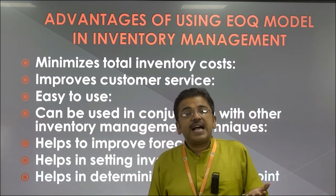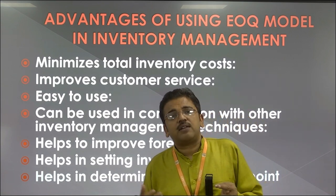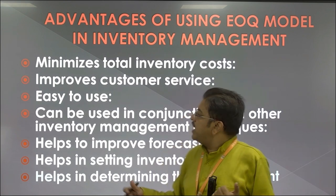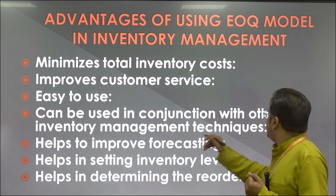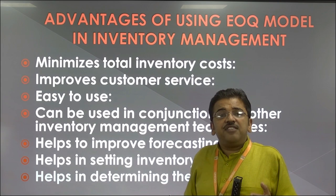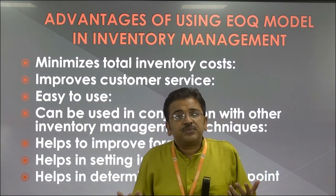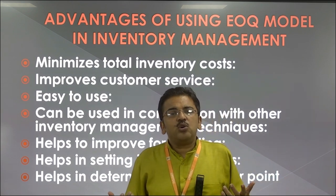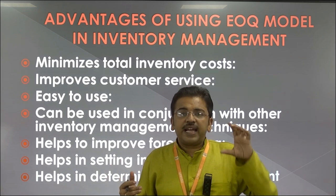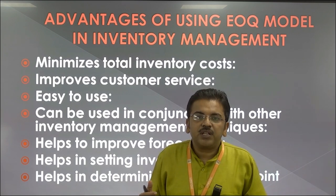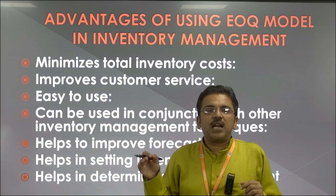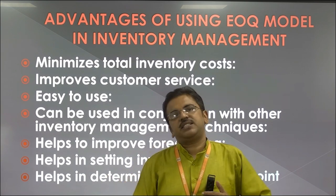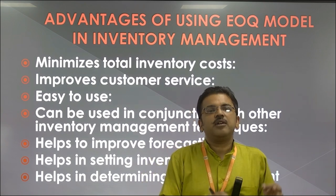The third advantage is that EOQ is easy to use — you only need to calculate two values: ordering cost and holding cost. When a person knows these two values, he can easily apply EOQ. It can also be used in conjunction with other inventory management techniques such as ABC (Always Better Control / Activity Based Costing), VED (Vital, Essential, Desirable), and JIT (Just In Time). Every inventory management tool has limitations, but EOQ calculates the best, minimum, and most economical cost, making it helpful for other inventory management systems.